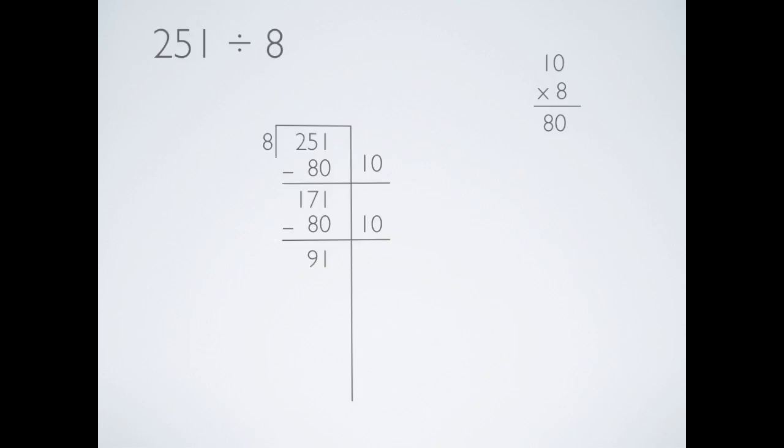91 is still bigger than 8, which means you've got more groups of 8 to divide. So ask yourself, how many groups of 8 are in 91? There are at least 10 groups of 8 in 91. So multiply 8 by 10 and subtract 80 from 91. You should get 11.